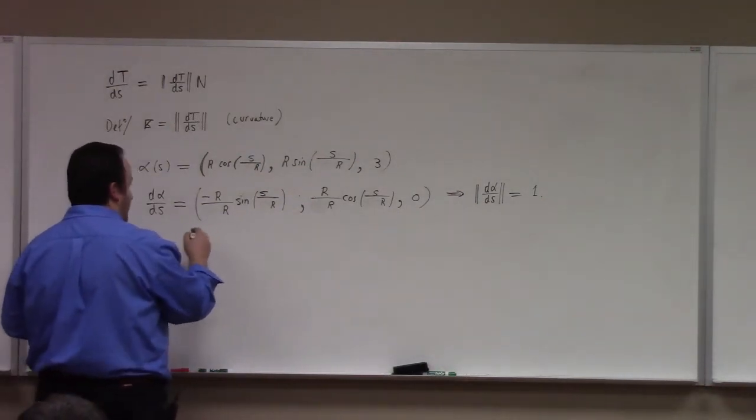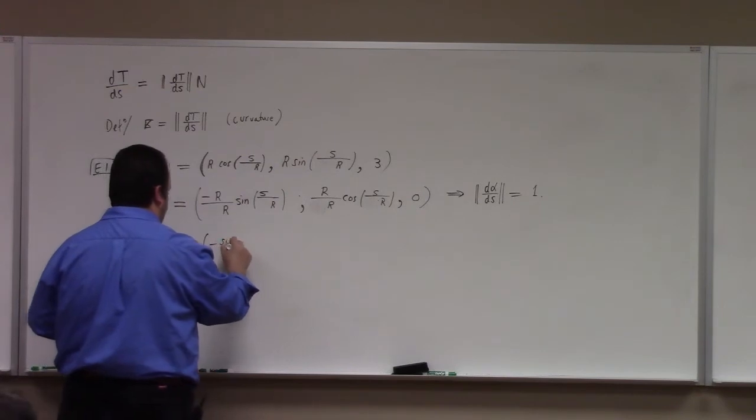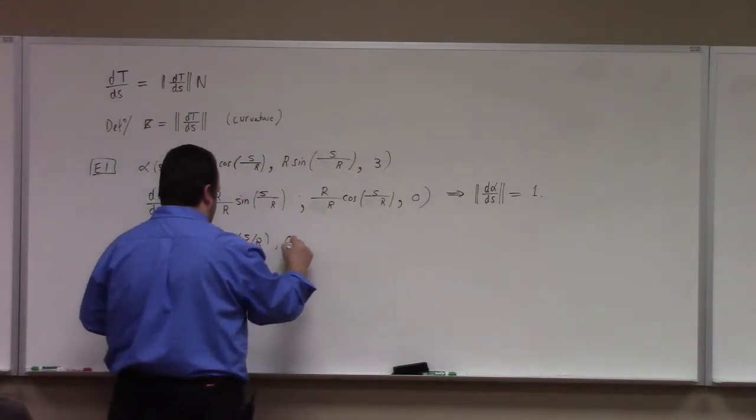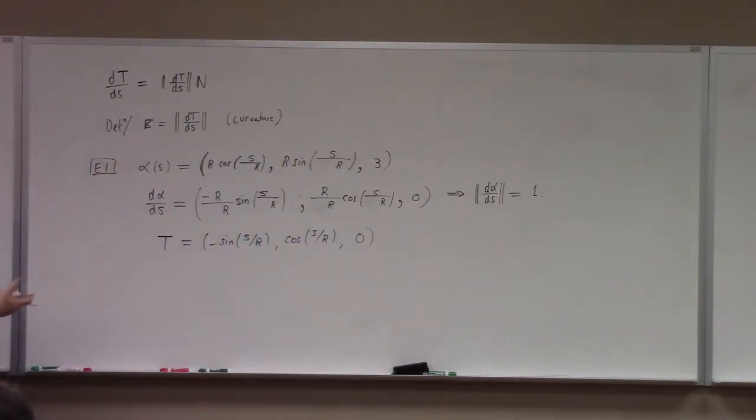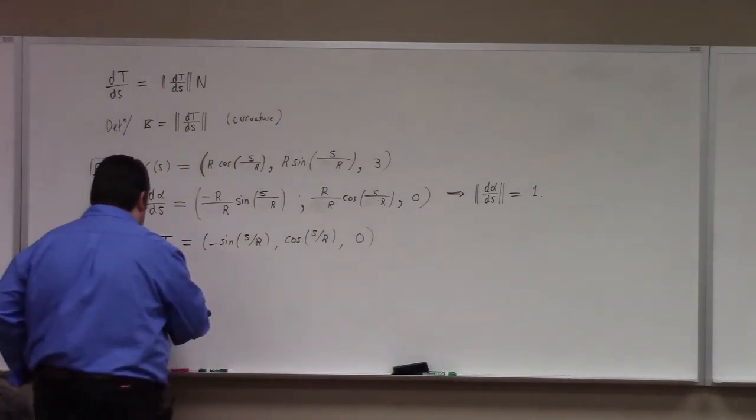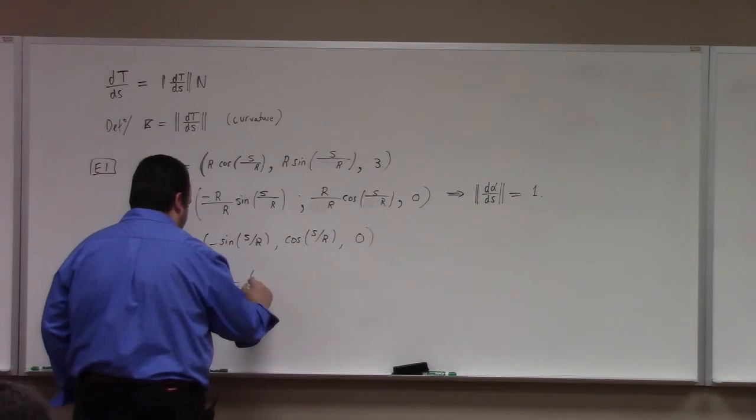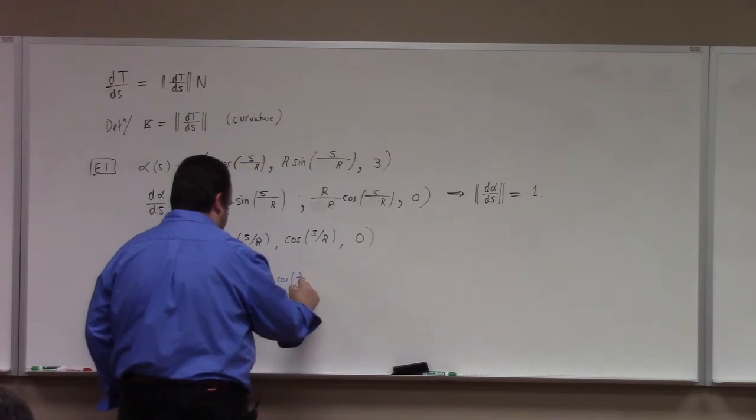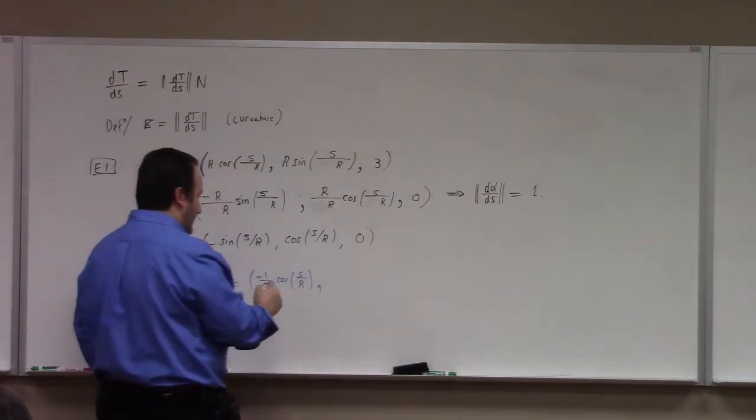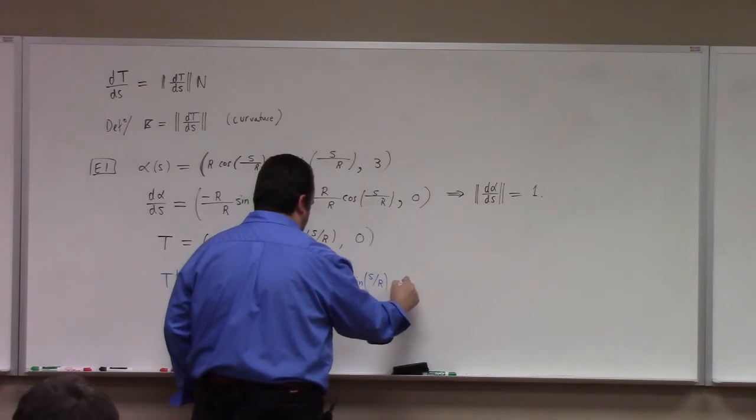And so great, so what I'm trying to get at here, guys, is that the unit tangent is minus sine of s over r, cosine of s over r, zero. You guys got it? And then, so what's T prime? T prime, or dT/ds, what's that? We've got, what, minus 1 over r, cosine of s over r, right? Comma what? Comma minus 1 over r sine of s over r, comma, zero.